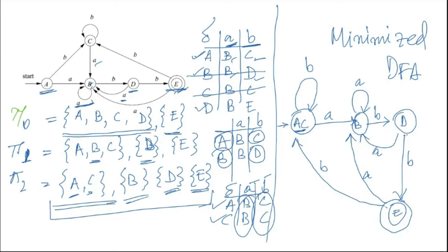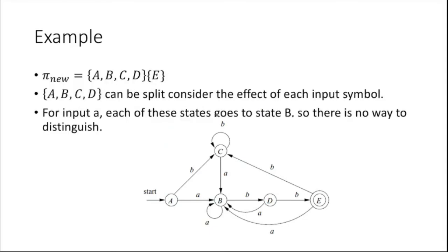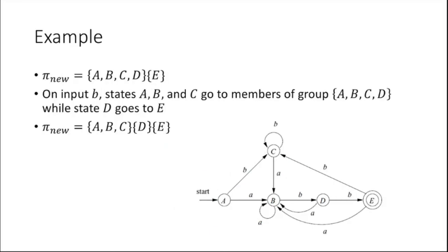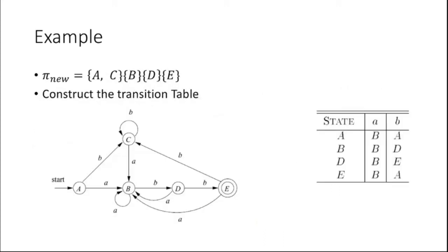So this is done. Here is the step-by-step solution. We had an initial partition among the states with non-final states and final state. Then, based on transitions, splits were done iteratively until no more splits were possible. This gives us the final minimized DFA.